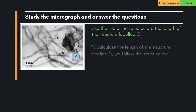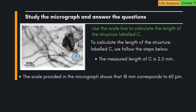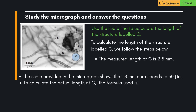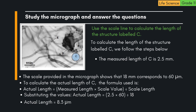Question: Use the scale line to calculate the length of the structure labelled C. The measured length of C is 2.5 mm. The scale provided in the micrograph shows that 18 mm corresponds to 60 µm. The formula used is: Actual length = (measured length × scale value) ÷ scale length. Substituting the values: Actual length = (2.5 × 60) ÷ 18 = 8.3 µm. Thus, the actual length of the structure labelled C is 8.3 µm.